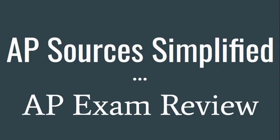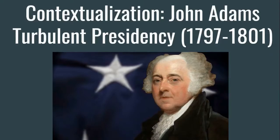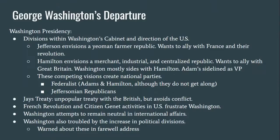Welcome to AP Sources Simplified. We are continuing on with our exam review. In this video, we are going to put John Adams' turbulent presidency into context by taking a look at the situation John Adams was stepping into and some of the controversies of his presidency. After the ratification of the Constitution, George Washington won the first election for the presidency. Washington, at the beginning of his presidency, was universally admired in the young republic. However, several difficult issues sprung up during his tenure that would have great influence on the difficulties in the John Adams presidency.